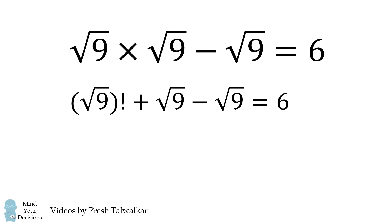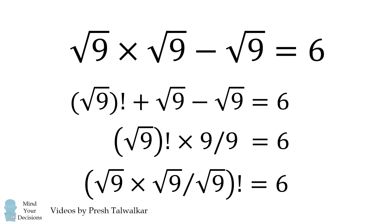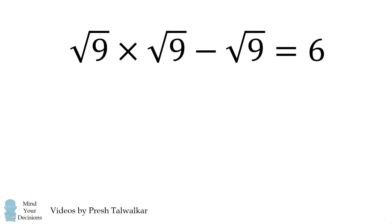Or, we could take the quantity the square root of 9 factorial plus the square root of 9 minus the square root of 9 is equal to 6. Or, we have some other solutions like the square root of 9 factorial times 9 over 9 is equal to 6. Or, the quantity square root of 9 times the square root of 9 divided by the square root of 9 we take the whole thing and the factorial of that and that is also equal to 6. For presentation purposes, I'll just take this first equation.